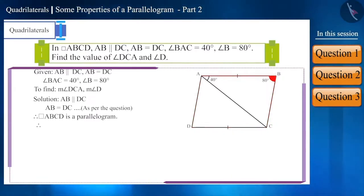So, angle B will be equal to angle D because the opposite angles of parallelogram are equal. So, angle D will also be 80 degrees.